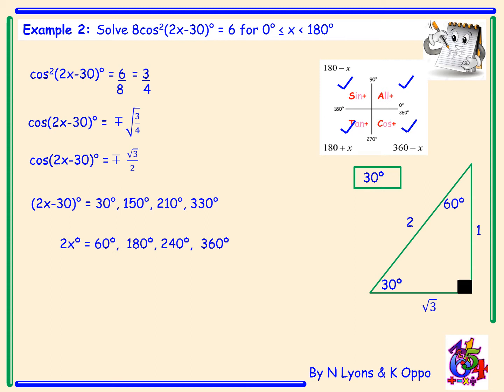To get x we divide every angle by 2, giving x equals 30, 90, 120, and 180 degrees. However, looking at our range, we were not asked for x equal to 180 degrees — it was x less than 180 degrees. So we discard that last angle and write our final solution as 30, 90, and 120 degrees.